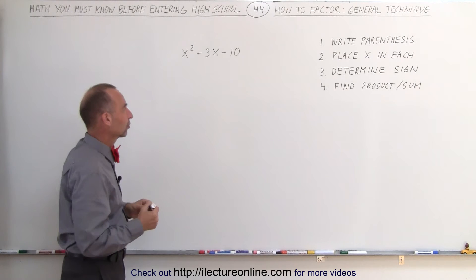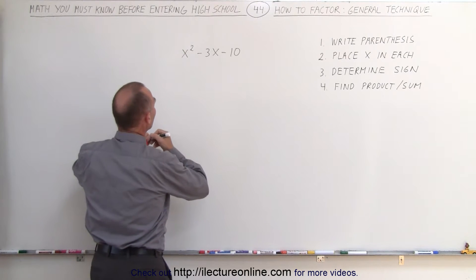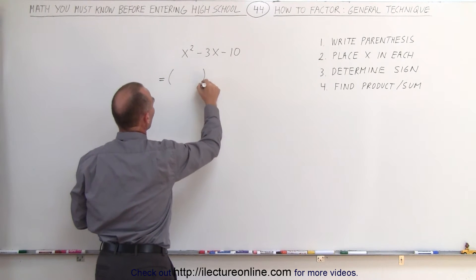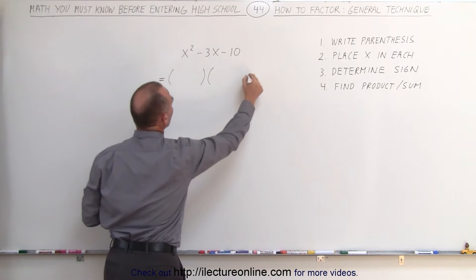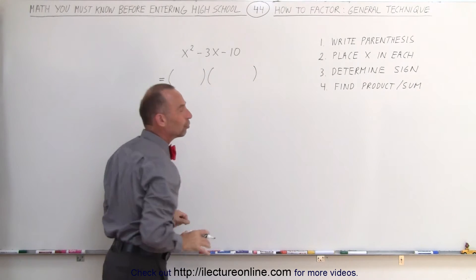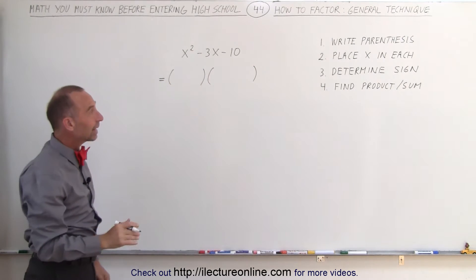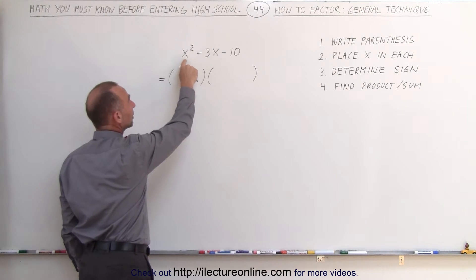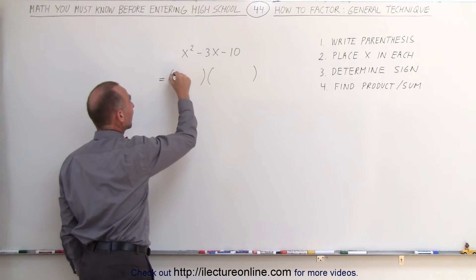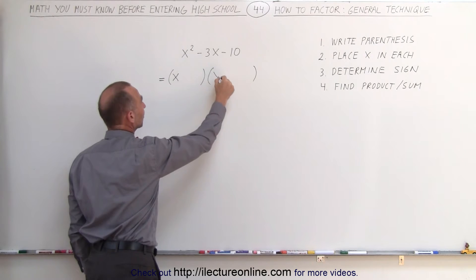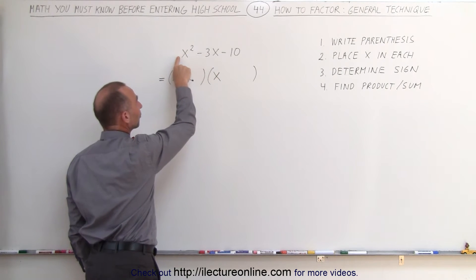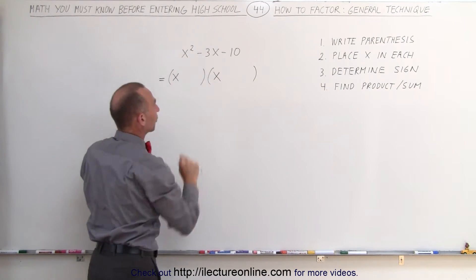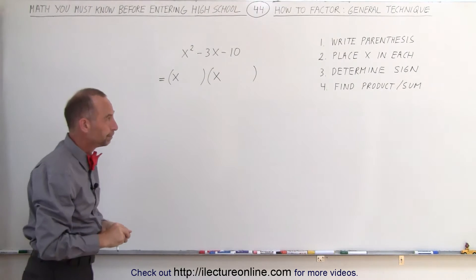So first we're going to write the parentheses. We know that this can be written as a product of two binomials, and therefore you write them within two parentheses like that. Next, since we have an x-squared here, you can only obtain that if you have an x in this parenthesis and an x in that parenthesis. Since the number in front of the x-squared is a 1, we don't have to worry about the coefficients over here — they're 1 as well.